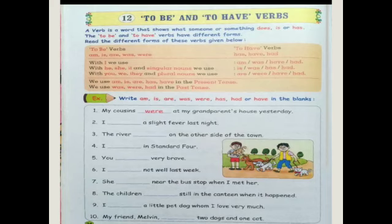Ninth sentence: I dash a little pet dog whom I love very much — the answer is 'I have a little pet dog whom I love very much'. Tenth sentence: My friend Melvin dash two dogs and one cat — the answer is 'My friend Melvin has two dogs and one cat'.